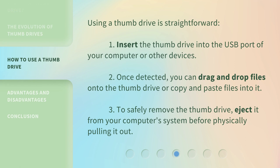Using a thumb drive is straightforward. First, insert the thumb drive into the USB port of your computer or other devices. Second, once detected, you can drag and drop files onto the thumb drive or copy and paste files into it. Third, to safely remove the thumb drive, eject it from your computer's system before physically pulling it out.